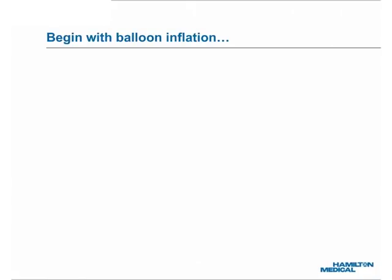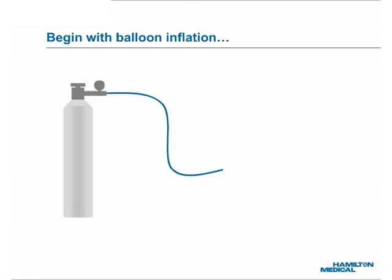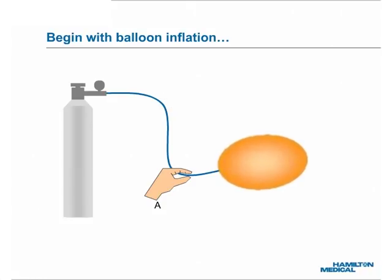The primary function of a ventilator system is to intermittently generate a positive PAO. Let's begin with a simple balloon inflation system. As shown here, the system has four parts: a full gas cylinder with valve, a connecting tube in blue, a balloon, and hand A to control the flow of passing gas. When the cylinder valve opens, the huge pressure gradient forces the gas to move into the balloon. However, by pinching the tube between finger and thumb, it's easy to control whether or how fast the balloon is inflated.